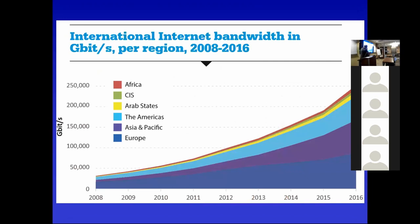This slide shows internet bandwidth in gigabits per region. You can see Africa — there's this little red line at the top — that's the amount of bandwidth they're consuming. There are a lot of people who might be 'on the internet,' which means they have an email account or set up a Facebook page, but that doesn't mean they're on it every day. It means that once every couple of weeks they go to an internet cafe.